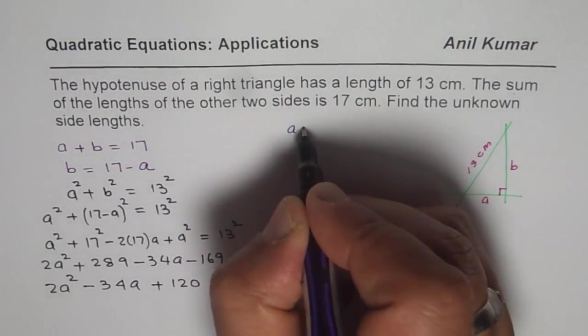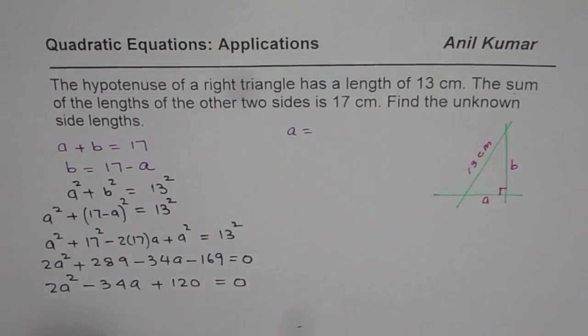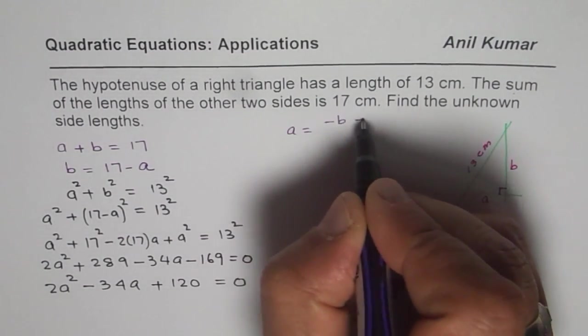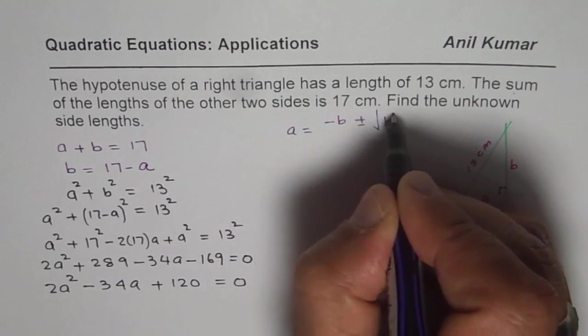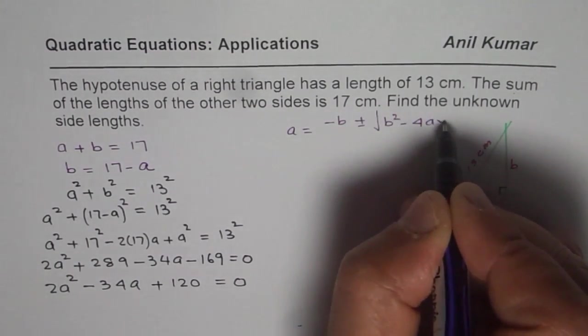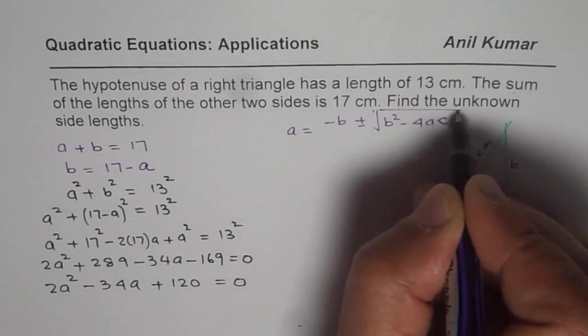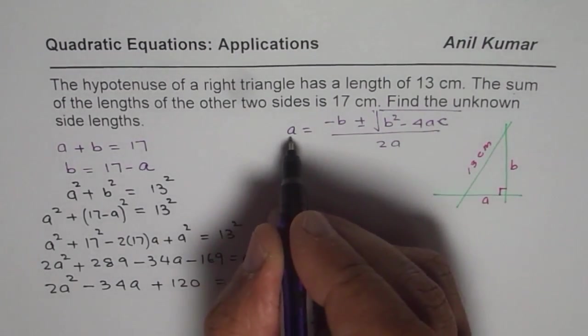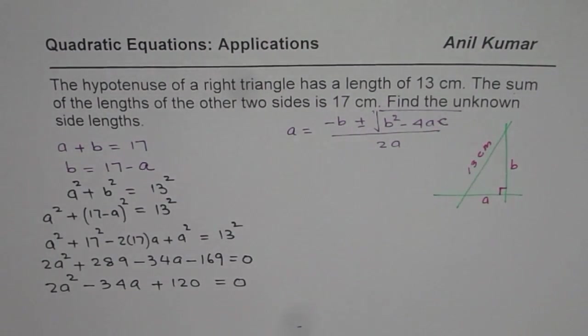which is A could be written as, A is our variable in this case. Because in quadratic formula we normally have terms like minus B plus minus square root of B² - 4AC divided by 2A. Well, that A and this A is different, right? This is our variable A.